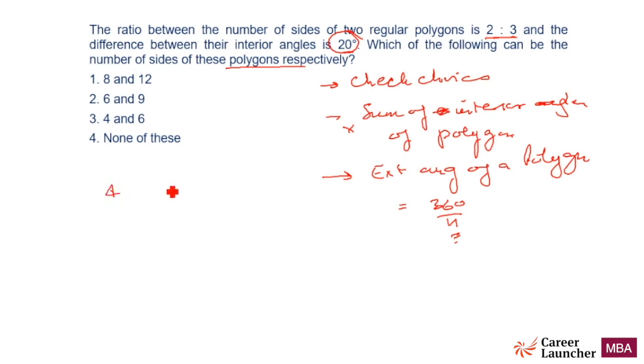360 by n, n is 4, that means each exterior angle is 90. So interior angle will be 180 minus 90. So exterior angle is this, that means interior angle will be 180 minus 360 by n.